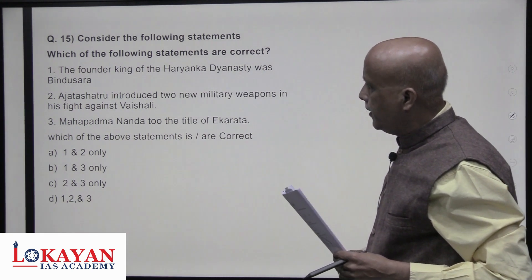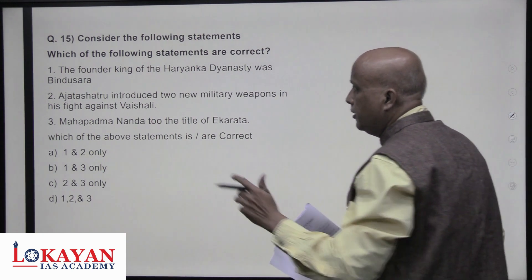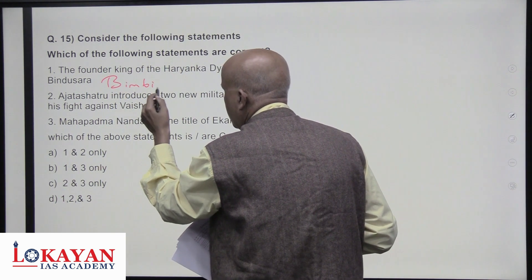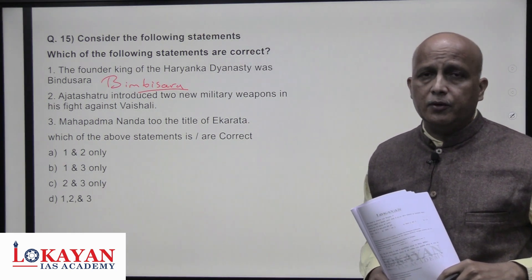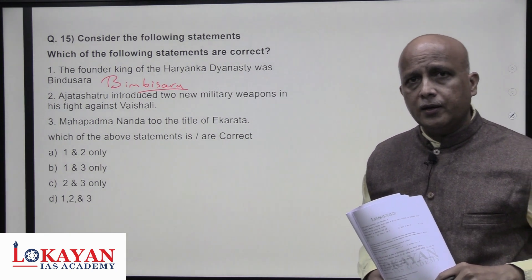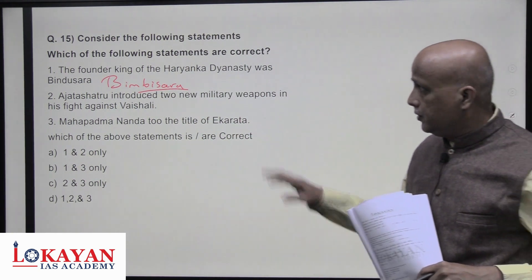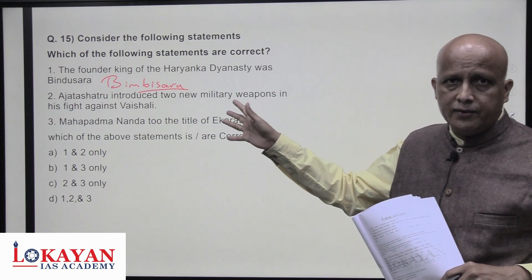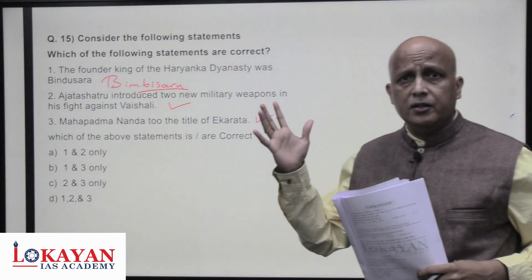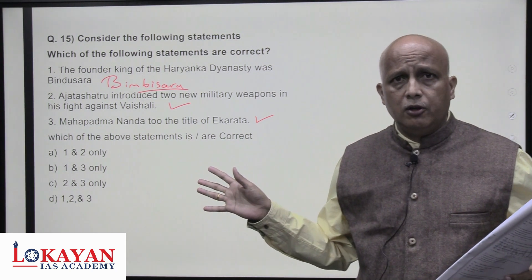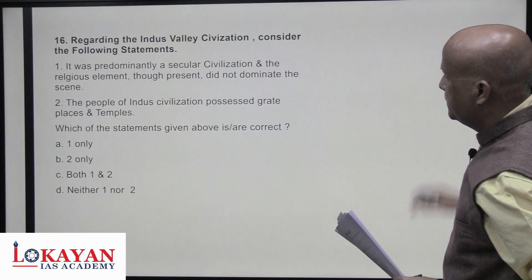The founder of the Haryanka dynasty was Bimbisara — note that Bindusara and Bimbisara look similar, but it is Bimbisara who is the founder. Bindusara was the son of Chandragupta Maurya and father of Ashoka. Ajatashatru introduced two new military weapons in his fight against Vaishali — true. Mahapadmananda had the title 'Sarvashatrantaka' — the one who finished all enemies. Statements two and three are correct; first is not correct — answer C.